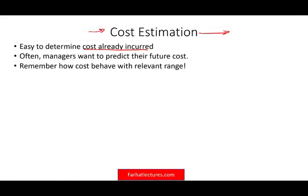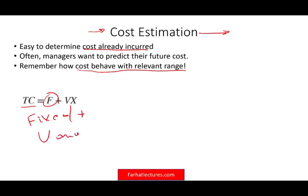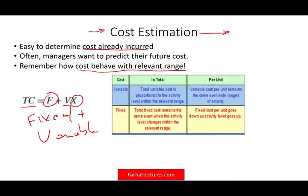We need to know for this session how costs behave within the relevant range, and we also need to remember the total cost formula: Total Cost = Fixed Cost (F) plus Variable Cost (V) times whatever output we are using. We also need to know how costs behave in terms of per unit and in terms of total cost.